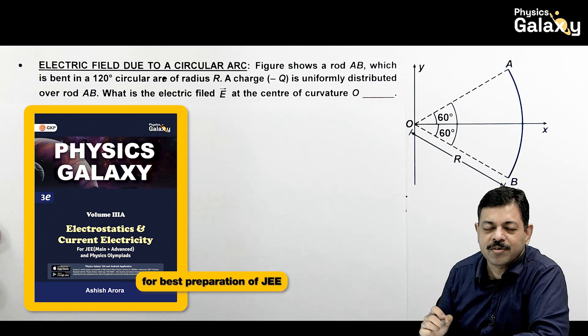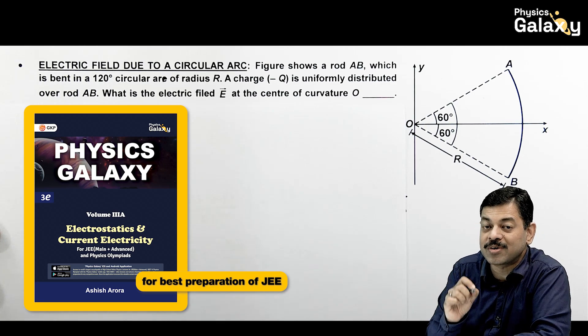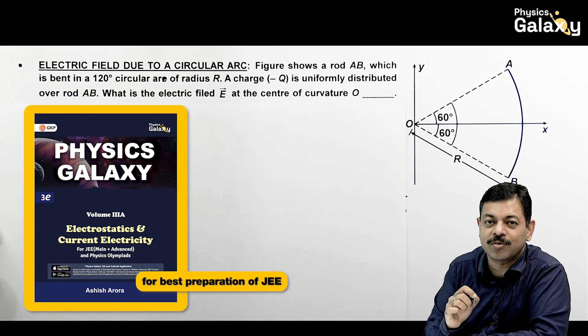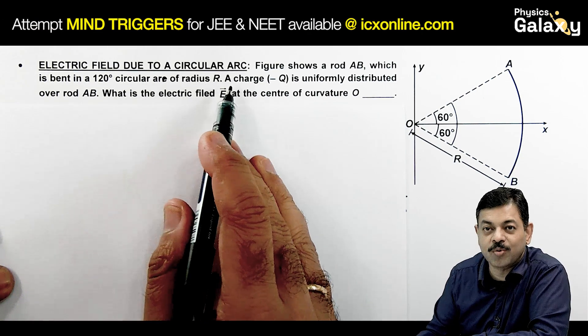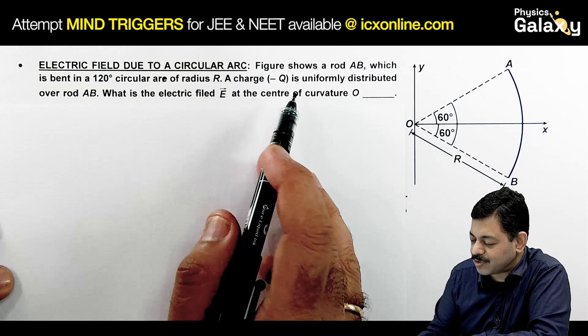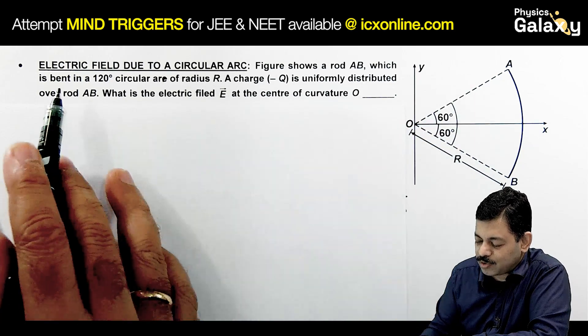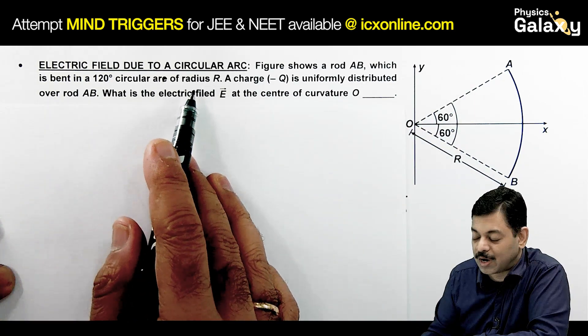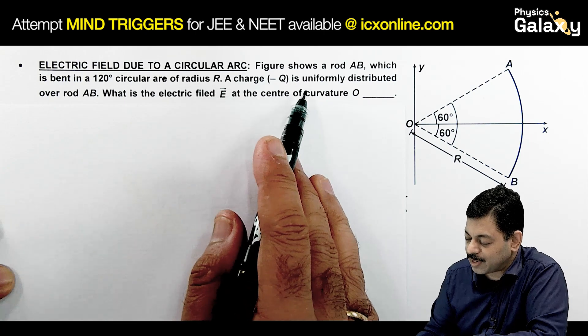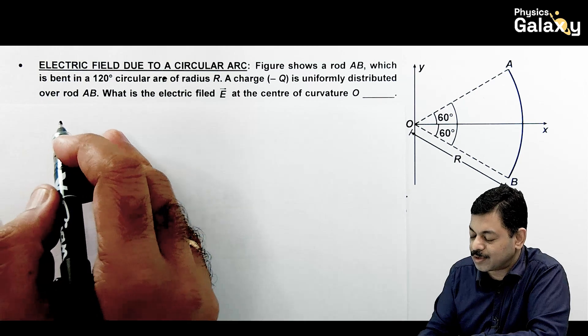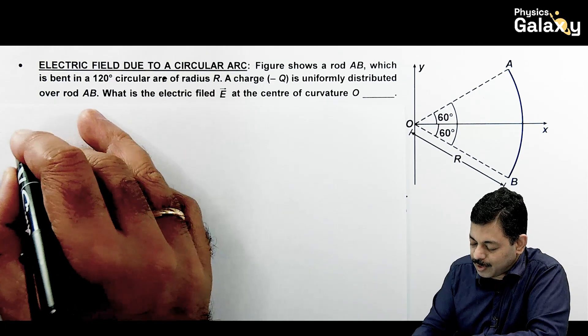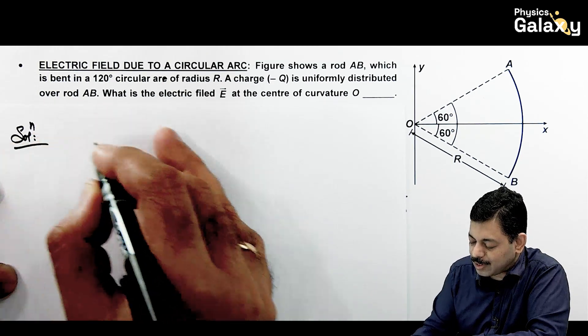Just one another straightforward case which has been asked many times, a standard case which we have covered in revision checklist, concept videos, everywhere. Which says an electric field due to a circular arc we need to check. It says figure shows a rod AB which is bent in a 120 degree circular arc of radius R and a charge minus Q is uniformly distributed over the rod AB, and we have to find the electric field at the center of curvature O. So if we look at the solution, here we can directly state for this arc which is subtending an angle phi at the center, charge is minus Q, so electric field will be toward this charge, so E will be along the x direction as given in the question.